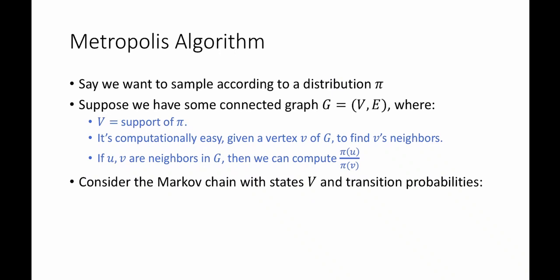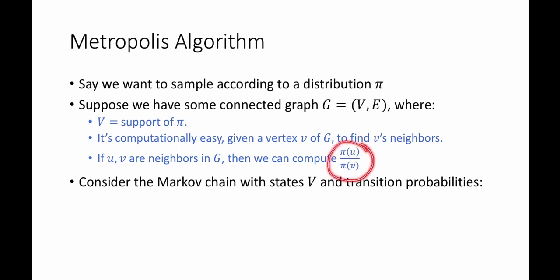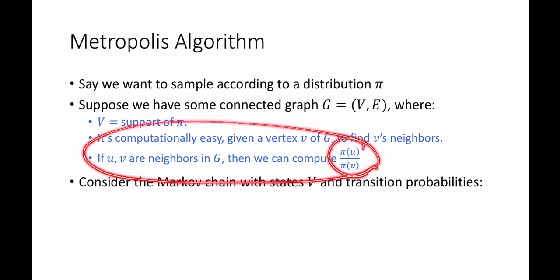Fortunately, there are ways to construct a Markov chain given a desired stationary distribution pi. One of these is called the Metropolis algorithm. Suppose we want to sample according to some distribution pi, and suppose we have some connected graph G whose vertices are the support of pi, and it's computationally easy to find a vertex's neighbors. Moreover, we want it to be the case that if U and V are neighbors in G, then we can compute the ratio pi(U) divided by pi(V).